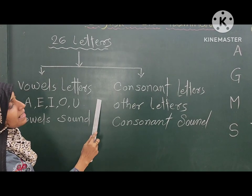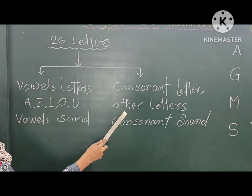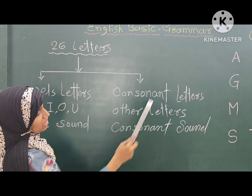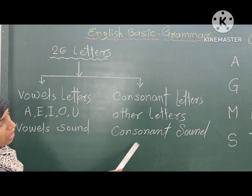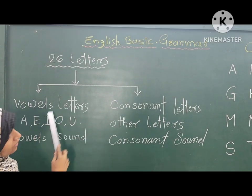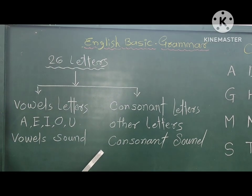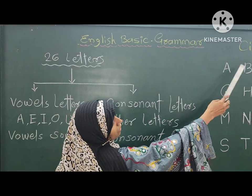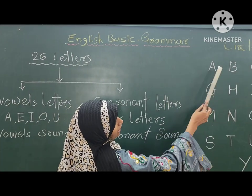And the rest of the letters are called consonant letters, which are dependent upon the consonant sound. Let us remind you — here we circle the vowels.